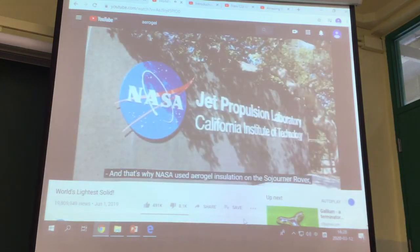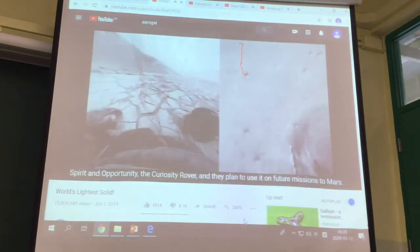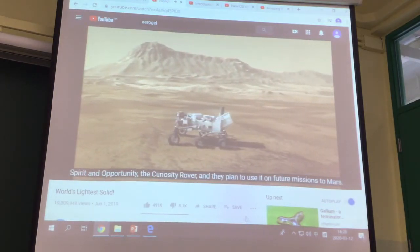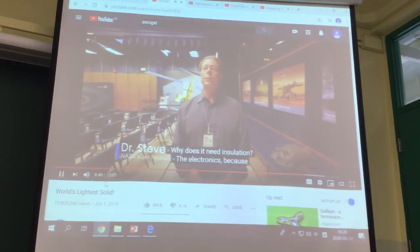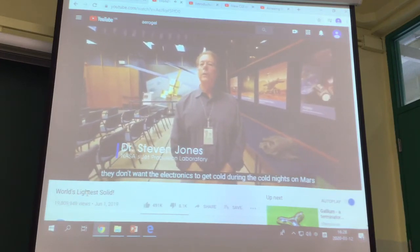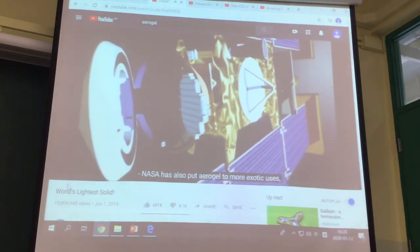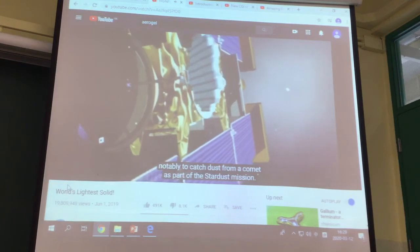That's why NASA used aerogel insulation on the Sojourner rover, Spirit and Opportunity, the Curiosity rover, and they plan to use it on future missions to Mars. Why does it need insulation? The electronics, because they don't want the electronics to get cold during the cold nights on Mars. NASA has also put aerogel to more exotic uses, notably to catch dust from a comet as part of the Stardust mission.